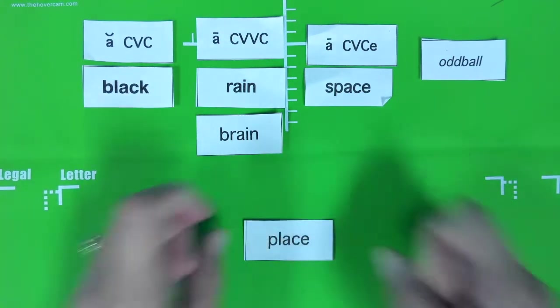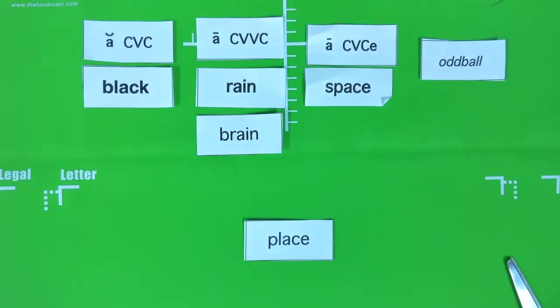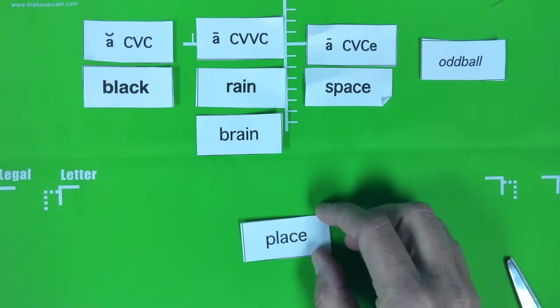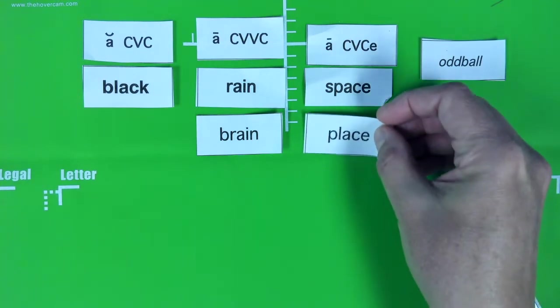I have another word here. It's place. Place. Oh, it's saying its name. I wonder why. I know why. Because there's an E at the end of this word. So this is a vowel here. Consonant, vowel, consonant, E. And that E makes the vowel say its name. A. So it goes under space.